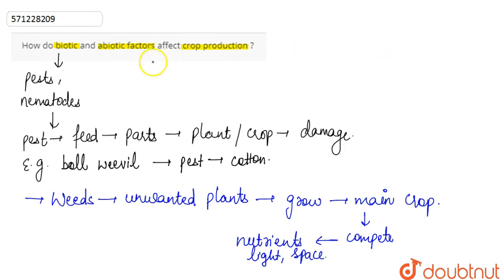Now if we discuss abiotic factors, there are many like salinity, temperature conditions, and humidity. They lead to loss in crop production. Certain natural calamities like drought...